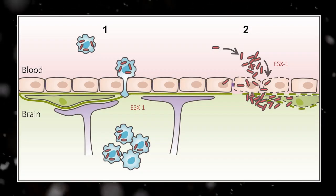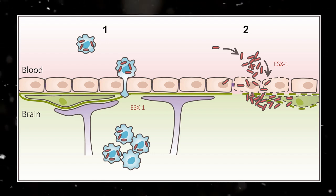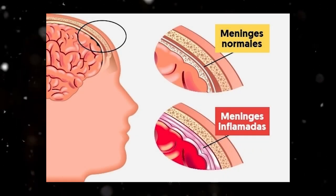Once through the blood-brain barrier, the pathogen will reproduce within the cerebrospinal fluid. The inflammation of the meninges will happen not as a result of the bacteria, but rather caused by the response of the immune system. Once the bacteria are identified, the body will produce a large amount of white blood cells to combat the bacteria, and as a result, the meninges will become inflamed.